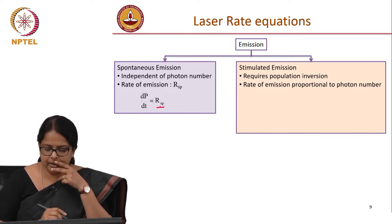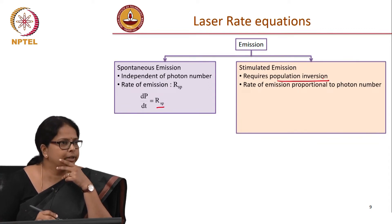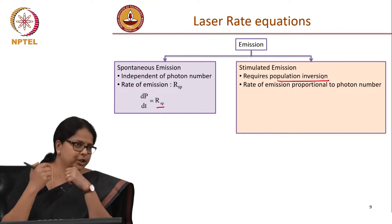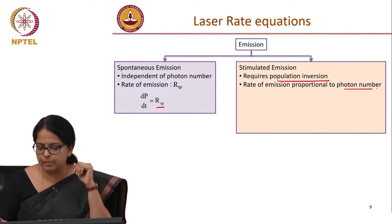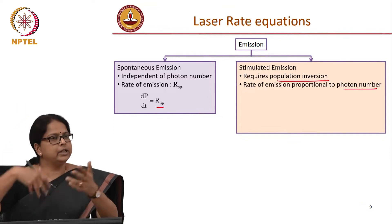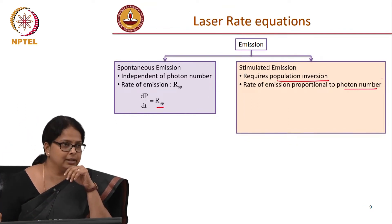Whereas stimulated emission, it requires population inversion. I told you already in the beginning of the lecture today, what is this population inversion, where I have enough n so as to compensate for the absorption in the system. Then the rate of emission should be proportional to the photon number. Larger you are exciting the system, the rate should initiate.